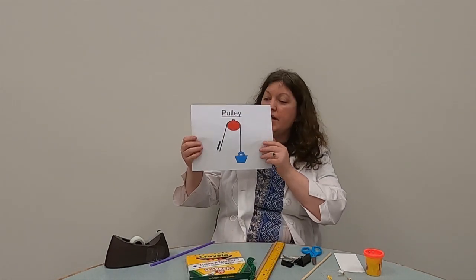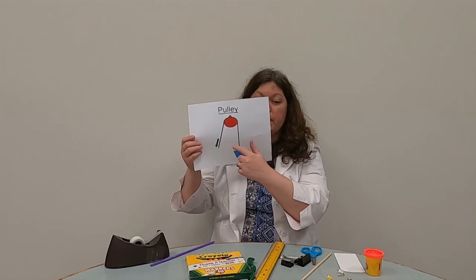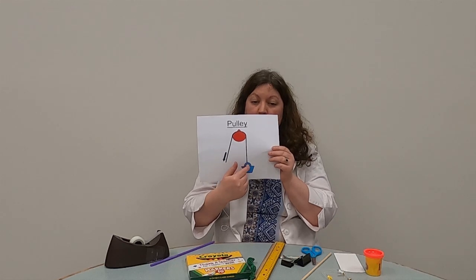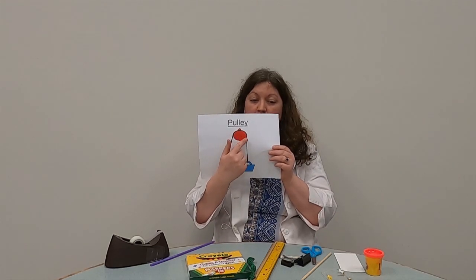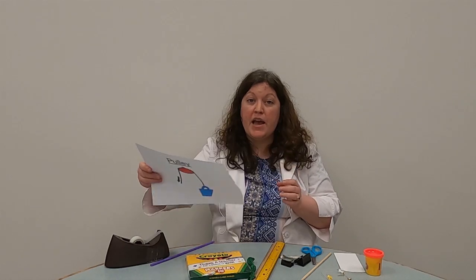Simple machines are basically inventions that help make work easier for us. Here is the pulley. A pulley has a wheel, and there's a groove that a rope goes through it. When a person pulls down on the rope, the other end of the rope goes around and comes up, and it helps make it easier to move heavy objects. There's a couple of different types of pulleys, and the one we're going to do today is called a fixed pulley, which means it stays in one place, and it's going to be a flagpole.